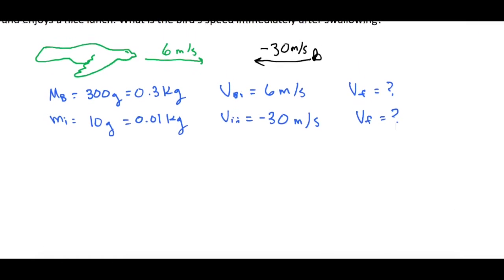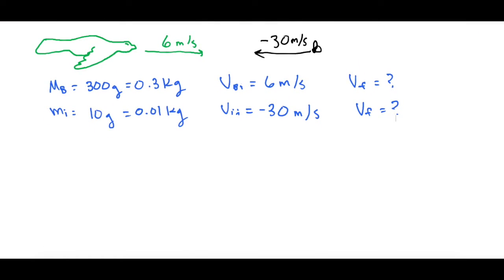So the bird is eating the insect. So the masses, they're going to be combined at the end. So we're used to the equation m1v1 plus m2v2 initial equals yada yada. At the end we normally have m1v1 initial plus m2v2 initial equals m1v1 final plus m2v2 final.